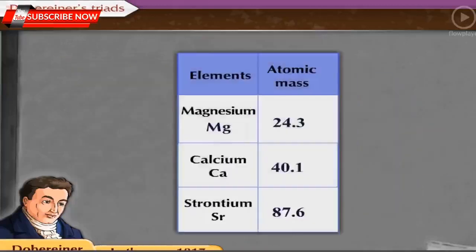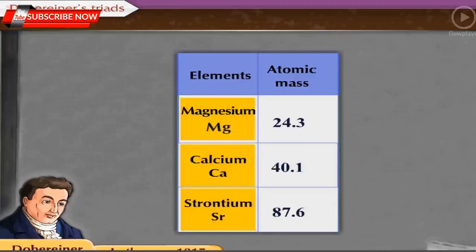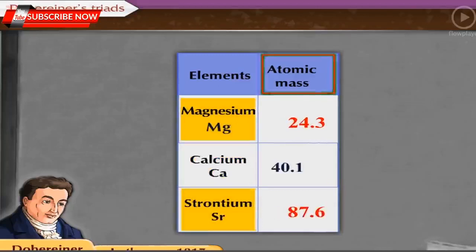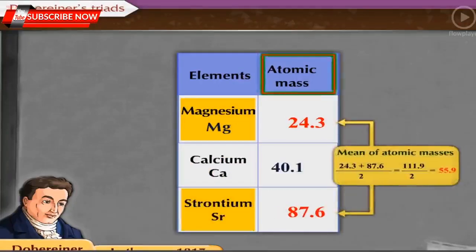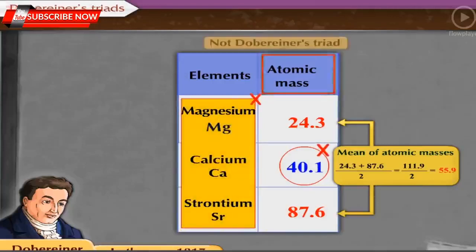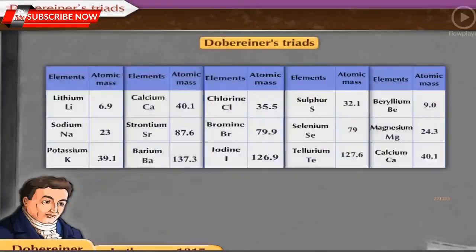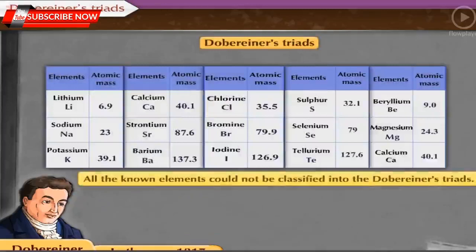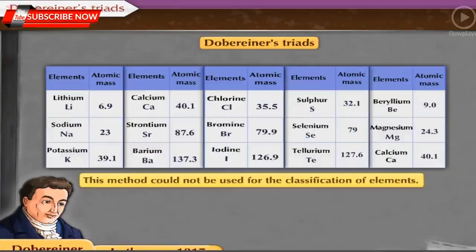Now, let us consider the atomic masses of magnesium, calcium and strontium and find whether they form a triad. The atomic mass of magnesium is 24.3 and that of strontium is 87.6. Their mean value is 55.9. This value is not equal to the atomic mass of calcium, which is 40. This shows that magnesium, calcium and strontium do not form a Dobereiner's triad. Thus, all the known elements could not be classified into Dobereiner's triads, and therefore this method could not be used for the classification of elements.